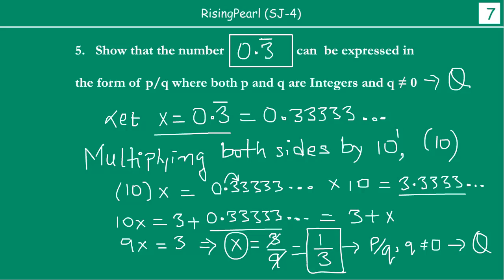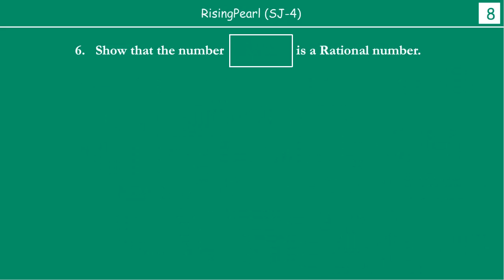So let us take some more examples. This time let us write something like 1.67 bar. Show that the number 1.67 bar is a rational number. This is our question.